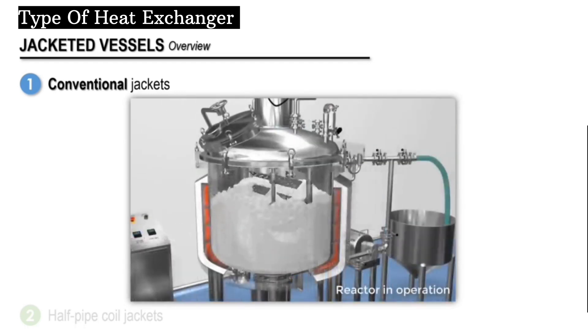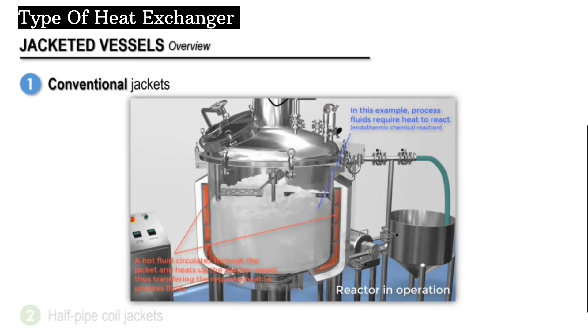Heat transfer fluid, depicted here in red, flows through the jacket. Let's assume here that the red fluid is a hot fluid and that the fluid inside the reactor is the cold fluid and needs to be heated.